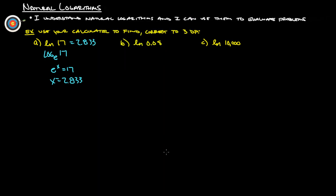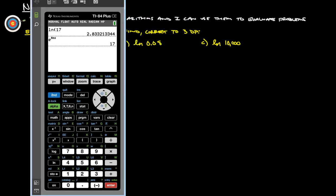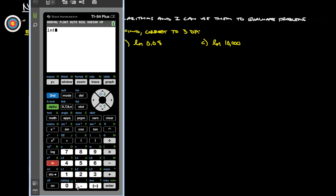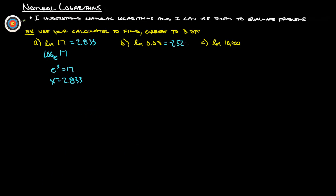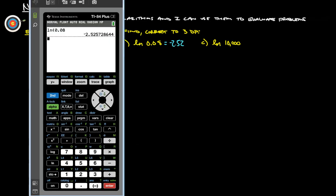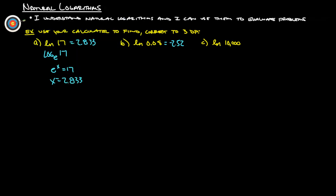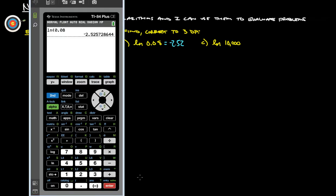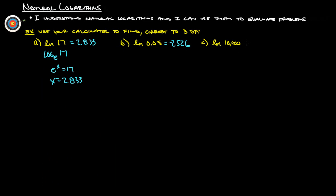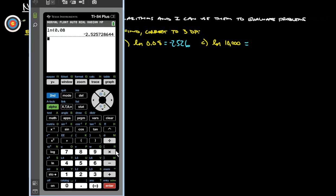Natural log of 0.08. So we just simply do natural log 0.08. And we get negative 2.526.